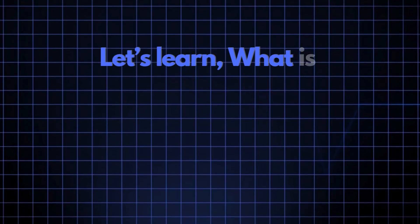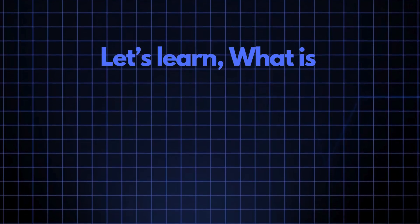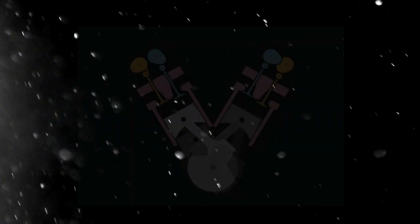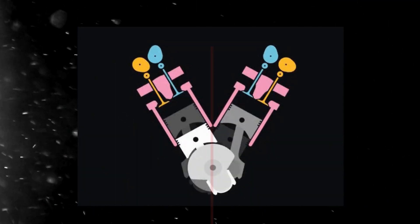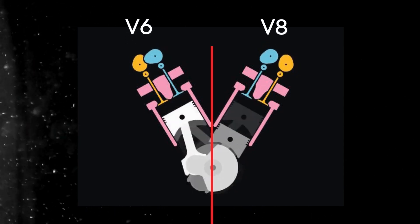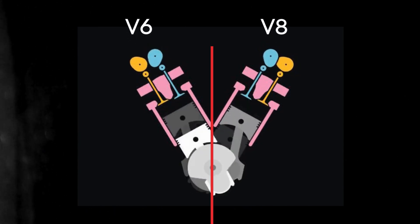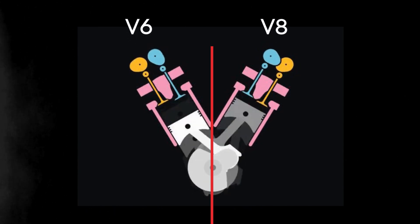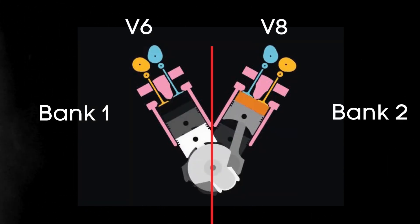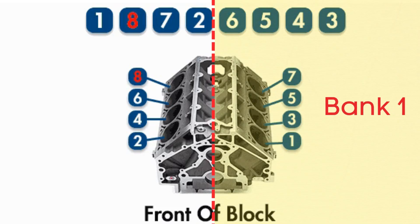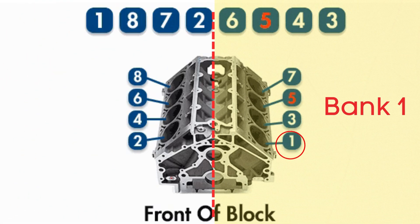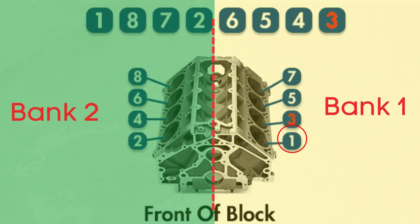Now let's learn what bank 1 sensor 2 means. In engines with multiple cylinder banks like V6 or V8 engines, you'll have two sides or banks of cylinders. Bank 1 typically refers to the side of the engine where cylinder 1 is located, and bank 2 is on the opposite side.